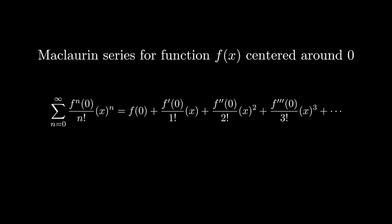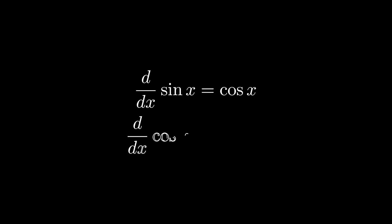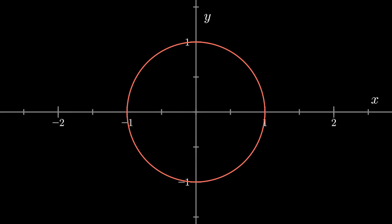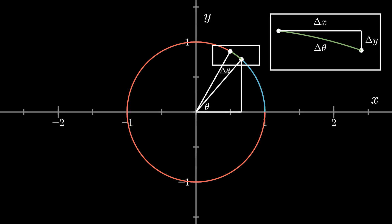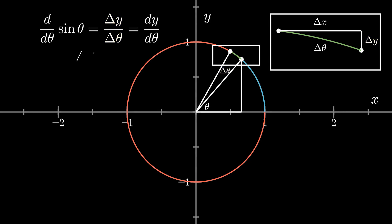Taylor and Maclaurin series don't always equal the function they represent, but they do for sine of x and cosine of x. The derivatives of these trig functions lead to interesting Taylor series. The derivative of sine x is cosine x, and the derivative of cosine x is negative sine x. This relationship comes from the definition of sine and cosine: on a unit circle with a right triangle, nudging the center angle theta by a small delta theta produces tiny nudges delta y and delta x. Since sine theta is the y-value, its derivative is delta y over delta theta as delta theta approaches zero, which is dy/d theta.